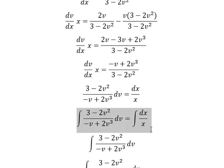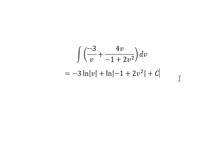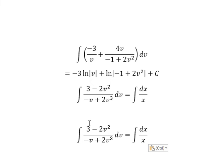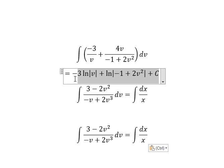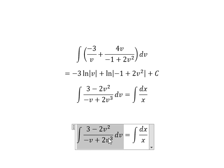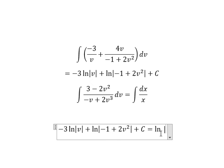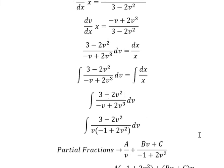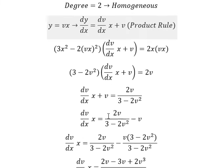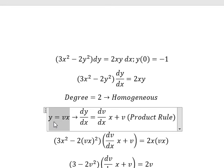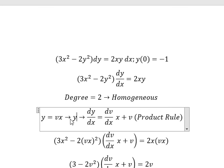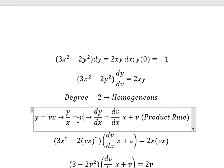Now we go back. The integration of this one gives us LN of the absolute value of negative 2. About V, that is about this expression. So we divide both sides by X, and now we need to change V back into y over x.